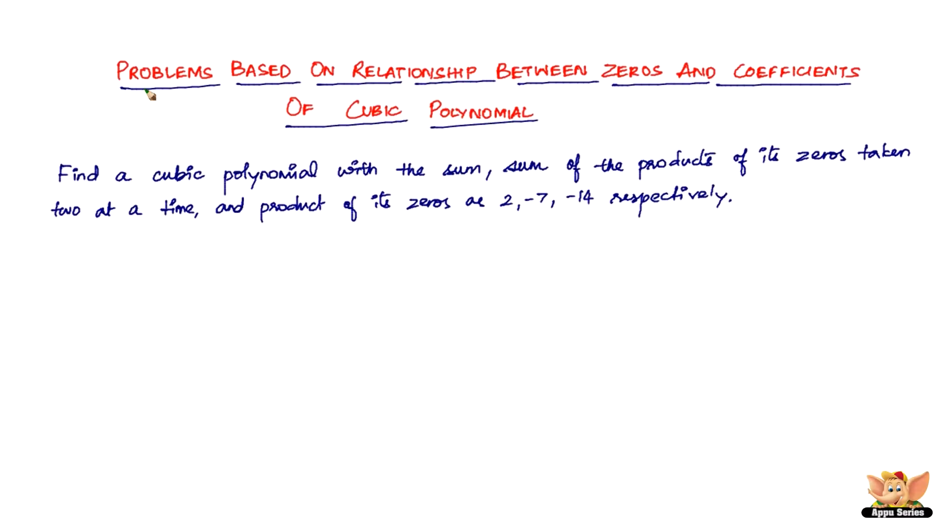In this video, let's continue to solve problems based on the relationship between zeros and coefficients of a cubic polynomial. The problem we've got here says: find a cubic polynomial with the sum,